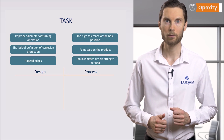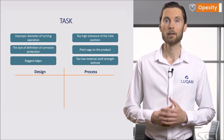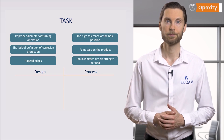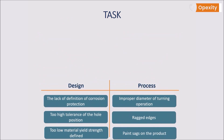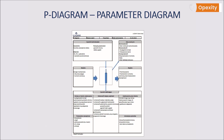The design failures are: lack of definition of a product's corrosion protection, too high tolerance of hole position, and too low material yield strength defined. The process failures are: improper diameter after turning operation, ragged edges, and paint sags on the product. As you may have noticed, failures at the product design stage will become very quickly visible during the production stage.